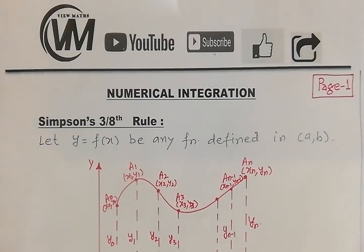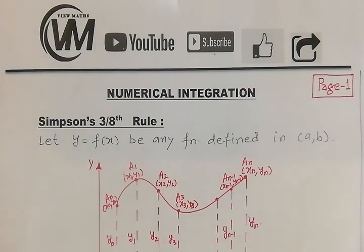There are three main methods for numerical integration: the trapezoidal rule, Simpson's one-third rule, and Simpson's 3/8 rule. I have already made videos on the trapezoidal rule and Simpson's one-third rule. If you want to learn those two methods, click on the links given in the description box. So let us start Simpson's 3/8 rule.